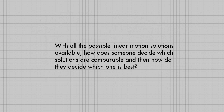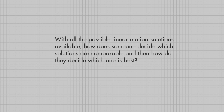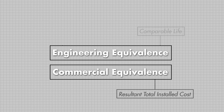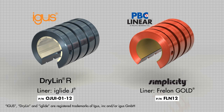With all the possible linear motion solutions, how does someone decide which solutions are comparable and which one is best? Through some basic analytical comparison we can decide which one to use. We will first use engineering equivalents to determine which solutions will perform similarly, and then use commercial equivalents to determine which is most cost-effective. For the purposes of this video, we are going to compare the imperial inch sizes of the igus drylin R bearing.